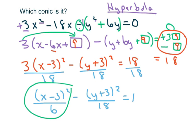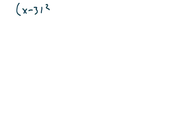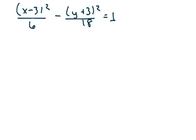The main thing to know is that x leads, so all the information follows from x. The foci will be on the x-axis, it opens left and right, and the transverse axis is horizontal. Let me write the equation again: (x − 3)² over 6 minus (y + 3)² over 18 equals 1.